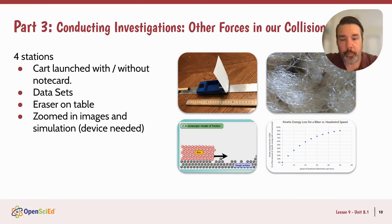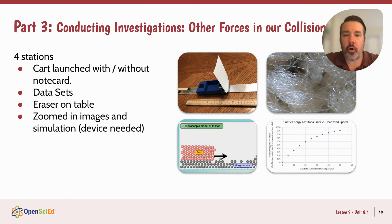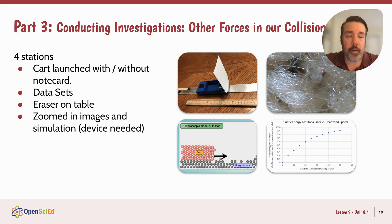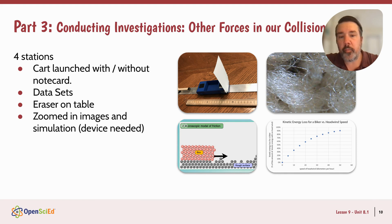Let's focus on part three, where we conduct investigations set up in stations. Station one is the cart launcher system, but this time we add a fan and a note card. We try four different trials — launching the cart toward the fan, launching it away from the fan, then doing both again with a note card on it — and we measure how far it goes.